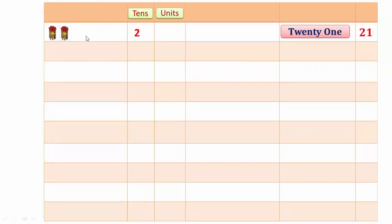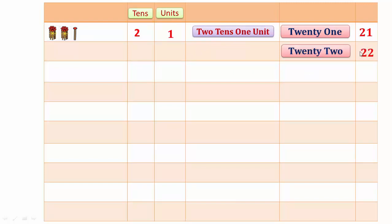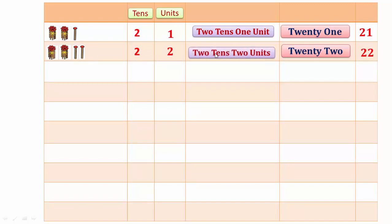In 21, there are two tens and one unit. Two tens and one unit makes 21. In 22, there are two tens and two units. Two tens and two units make 22.